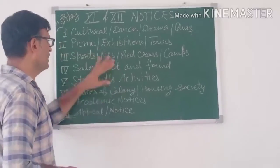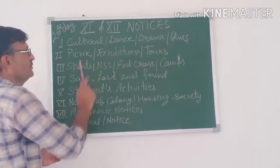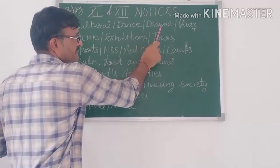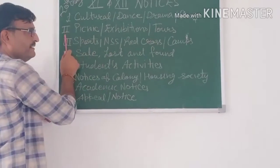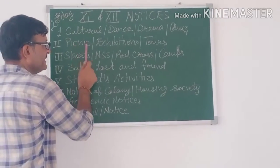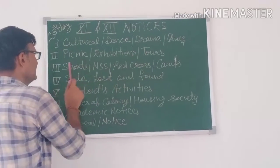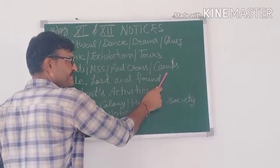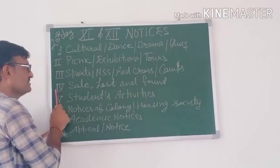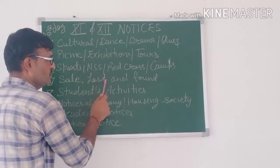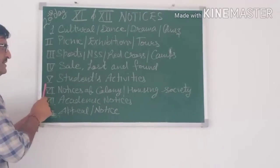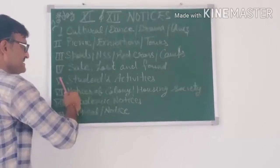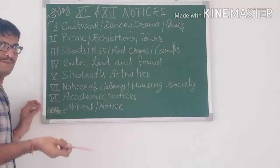The topics related to notices are as follows: First, notices can be in the form of cultural activities — dance, drama, quiz. Second, notices can be in the form of picnics, exhibitions, and tours. Third, notices can be in the form of sports, NSS, retreats, and camps. Fourth, notices can be in the form of sales, lost and found. Fifth, notices can be in the form of student activities. I have already sent you these kinds of notices for practice in PDF form.